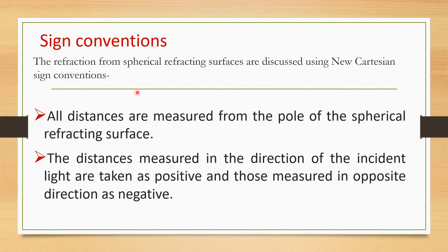Before starting simple microscope, let us have a look at the sign conventions. The refraction from spherical refracting surfaces are mainly discussed using new Cartesian sign equations. Now what are these sign equations? All the distances are measured from the pole of the spherical refracting surface. Pole i.e. center. Second one, the distances measured in the direction of incident light are taken as positive and those measured in opposite direction will be taken as negative.